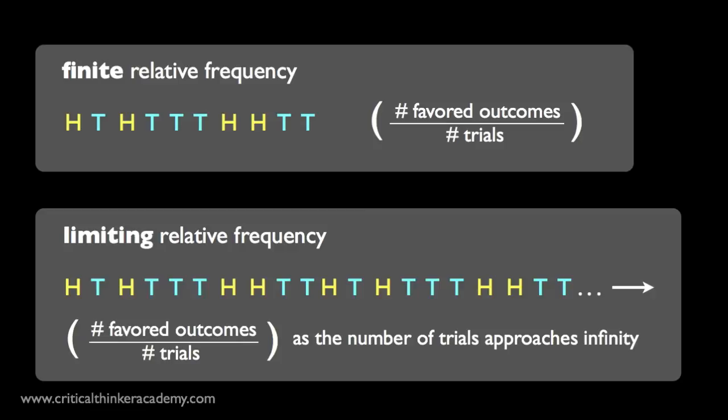Actually, what we've done here is introduce two different relative frequency definitions. You can talk about probabilities in terms of finite relative frequencies, where we're only dealing with an actual finite number of observed trials, or we can talk about probabilities in terms of limiting relative frequencies, where we're asked to consider what the relative frequency would converge to in the long run as the number of trials approaches infinity.